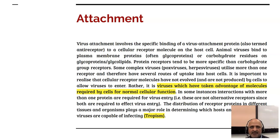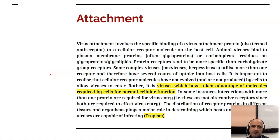The first step is attachment. Some viruses will infect via the nasal route, some via the oral route, some via the ocular route. Why a virus is specific to a specific organ or cell type comes down to receptors. From an evolutionary standpoint, viruses have taken advantage of molecules required by cells for normal cellular function. Viruses bind to receptors — they may bind to a single receptor or a multiple set of receptors — and this receptor binding facilitates attachment of the virus to the host cell.